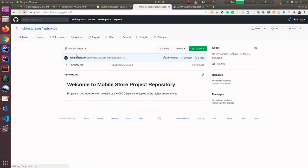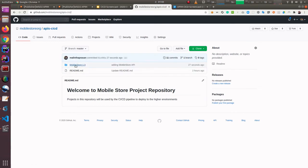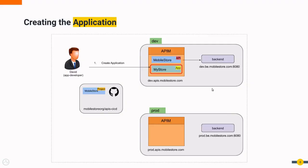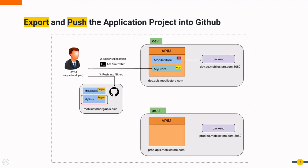Alice can now push this project to GitHub. After refreshing the page, the Mobile Store project is visible in the GitHub repository. Similarly, David, the app developer, has an application called MyStore that consumes the Mobile Store API, and he is going to export the application using API Controller and push the exported project into the same GitHub repository.